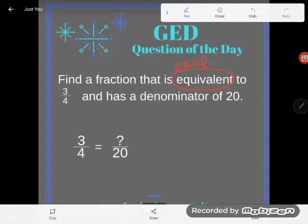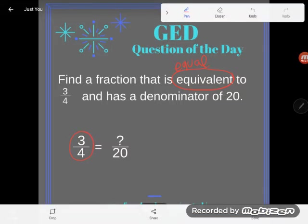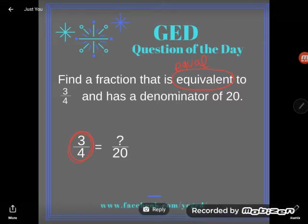So let's think about this. A fraction is not its individual numbers. This fraction is not three and four, like three and four are two separate numbers. A fraction is a relationship between a numerator and a denominator. So what we're looking for here is a fraction that is equivalent to three-fourths and has a denominator of 20, something that has 20 things on the bottom but retains that basic relationship of three to four.